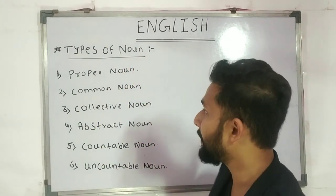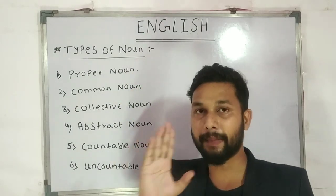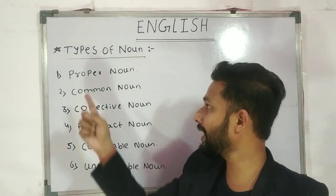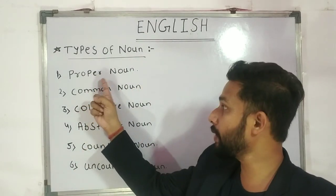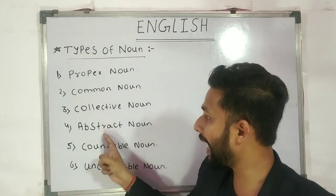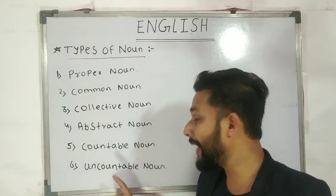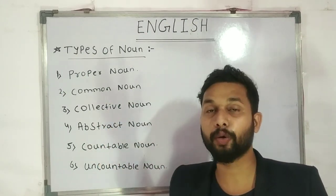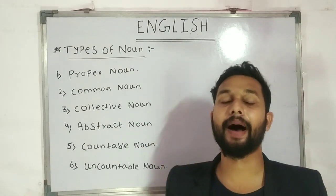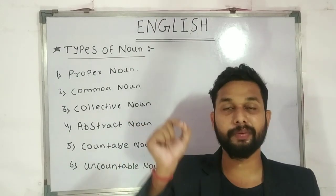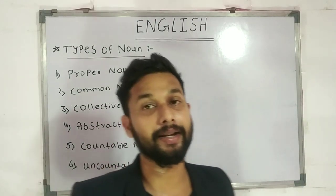Today we will learn types of nouns. I will tell you. The types are: first, proper nouns; second, common; third, collective; fourth, abstract; fifth, countable; sixth, uncountable. These are a total of 6 types of nouns, and I will explain each one.